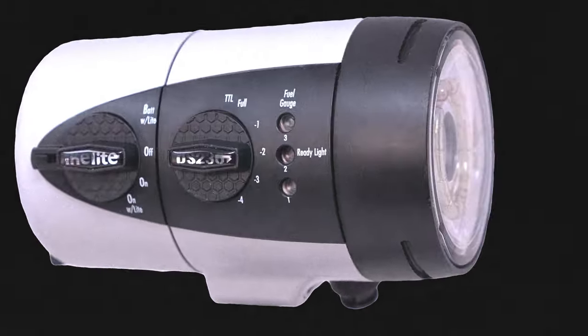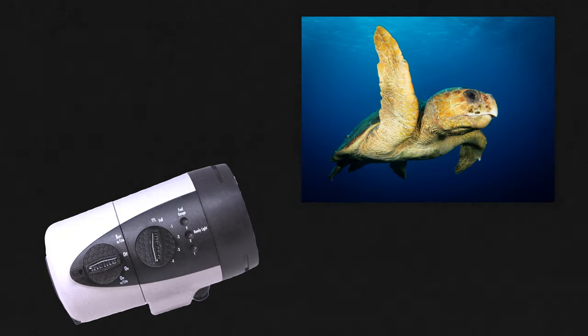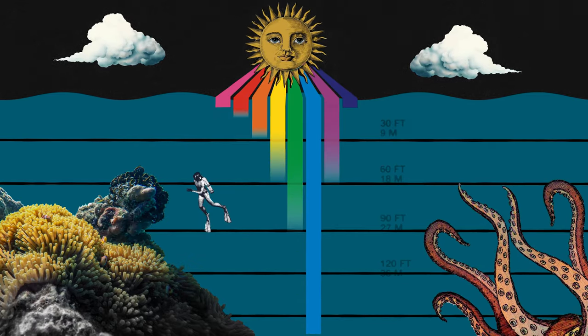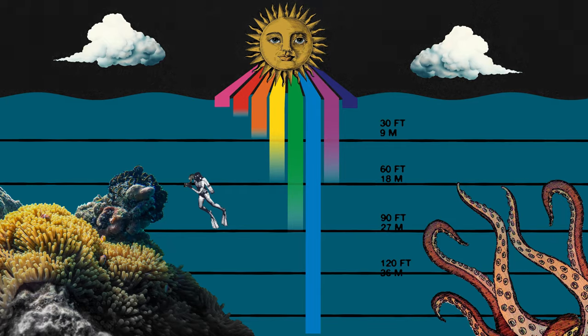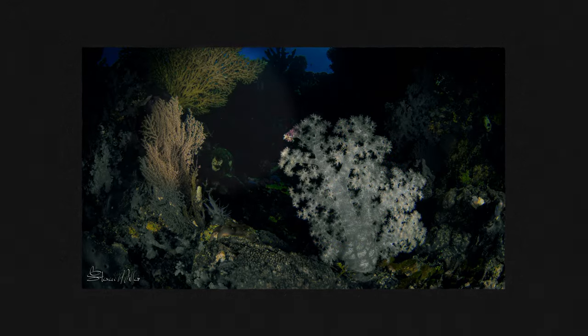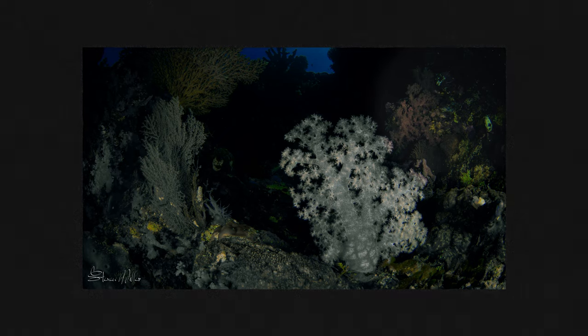When we talk about strobe exposure, we're talking about the power of the strobe. Strobe exposure settings will primarily affect the brightness of the subject. Keep in mind, underwater we use flash even when we have enough light on our subject. Sunlight contains all the colors of the rainbow, but by the time it passes through about 30 feet of water, only blue and green light hits your subject. We need to literally shine a light on our subject if we want to photograph the reds, oranges, and purples in the underwater world.